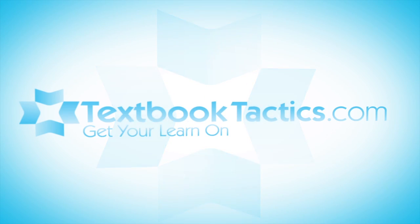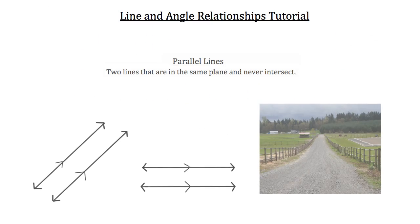This is the line and angle relationships tutorial. Let's first talk about parallel lines. Parallel lines are two lines that are in the same plane and never intersect.